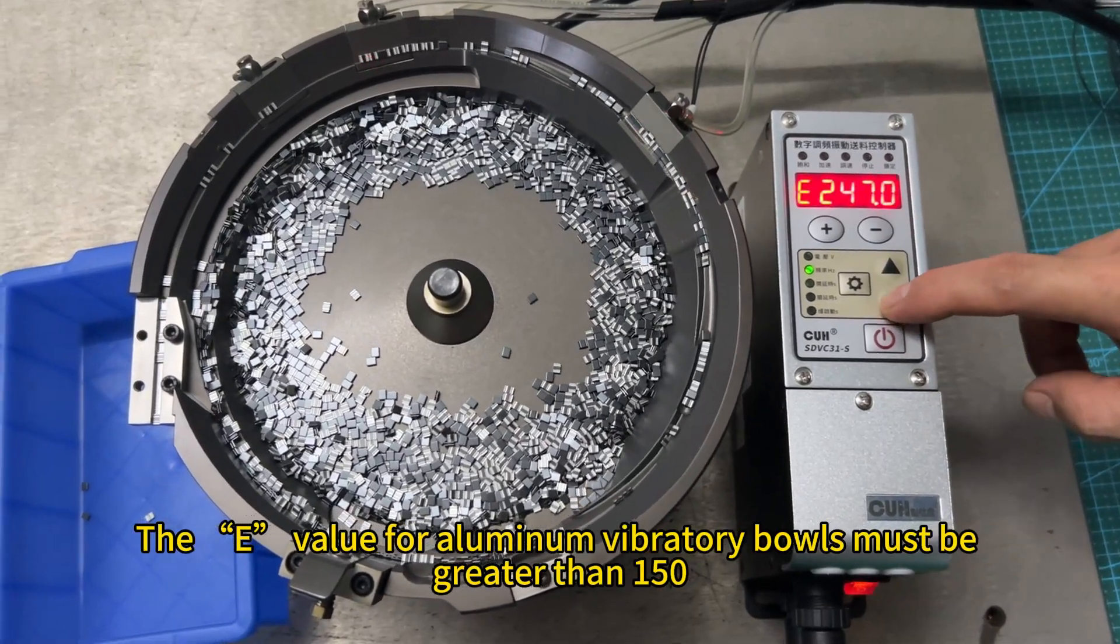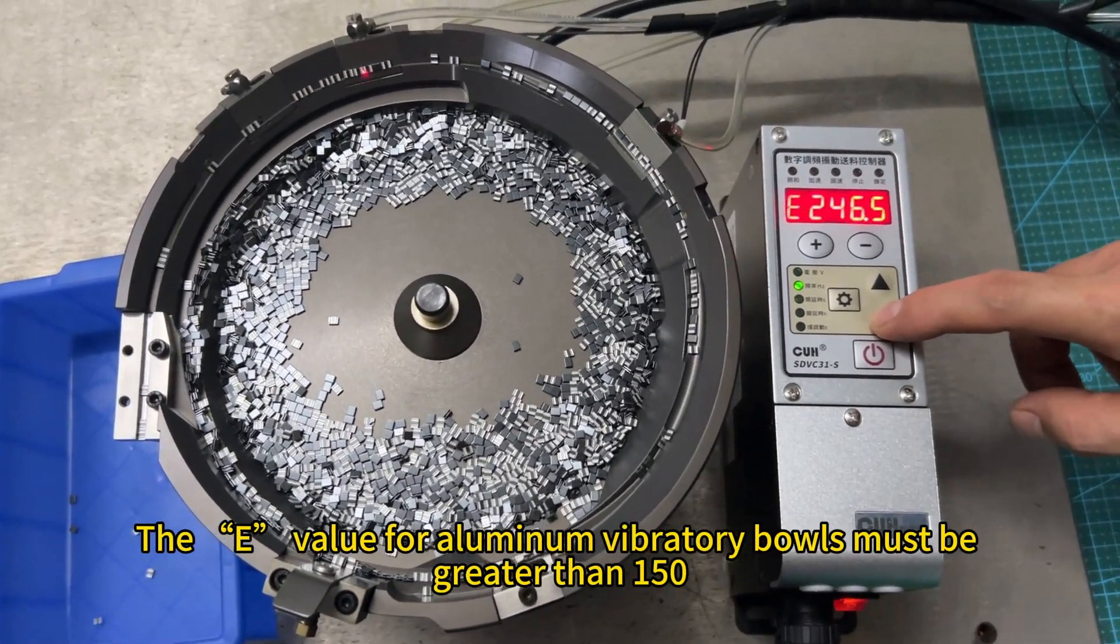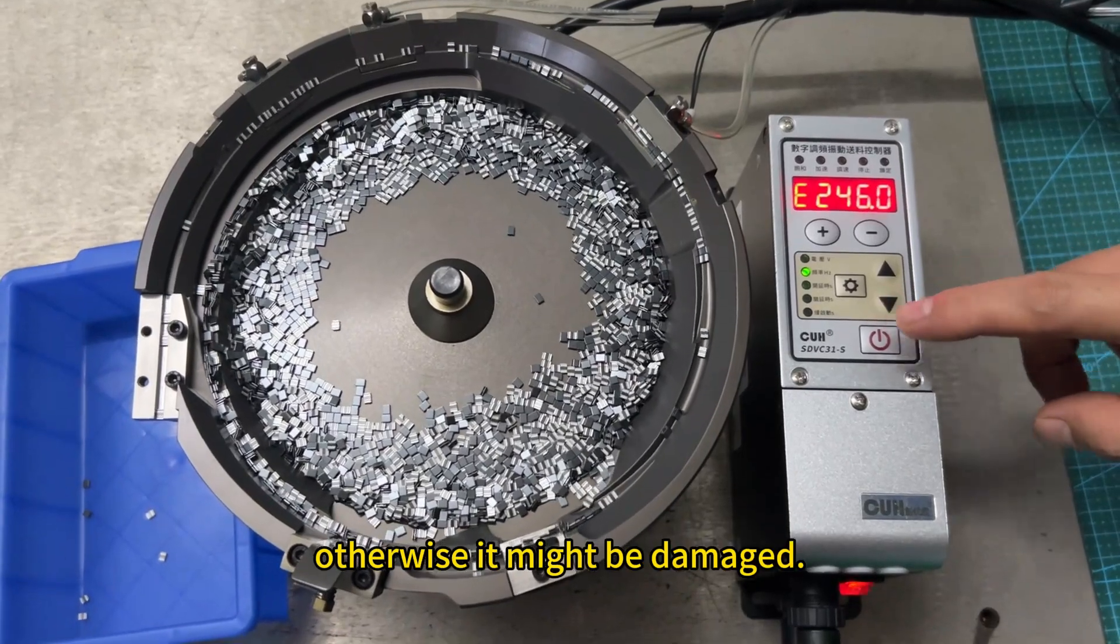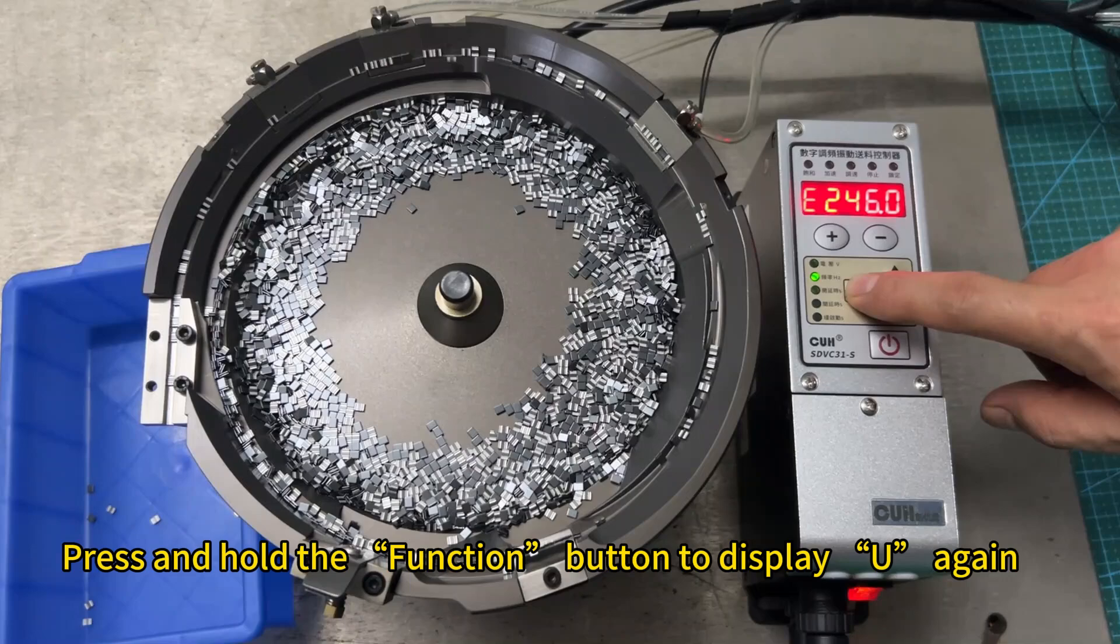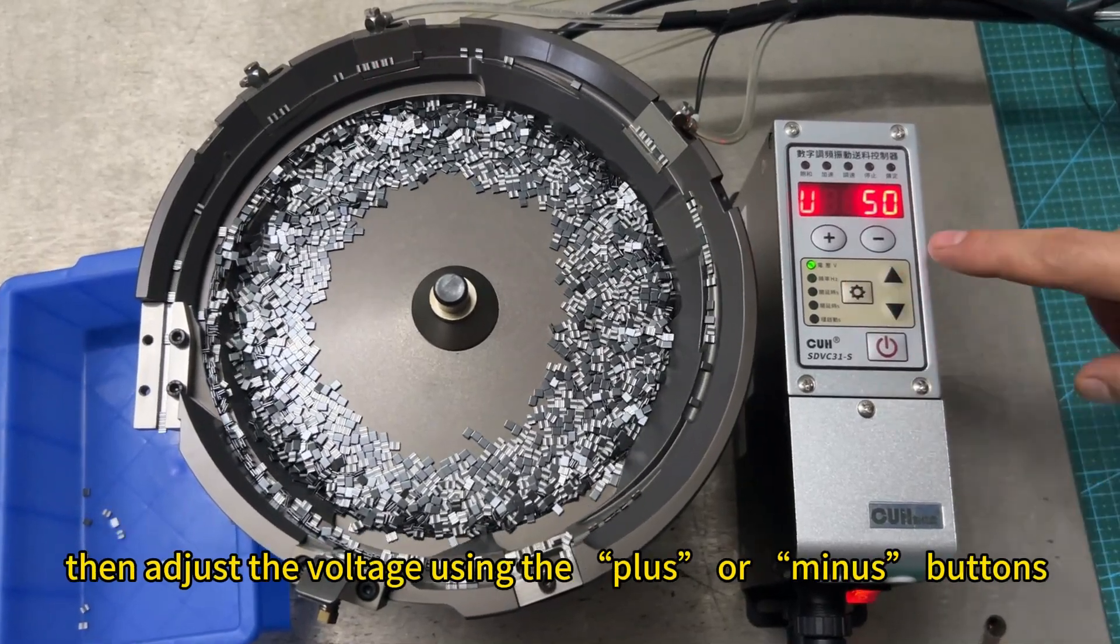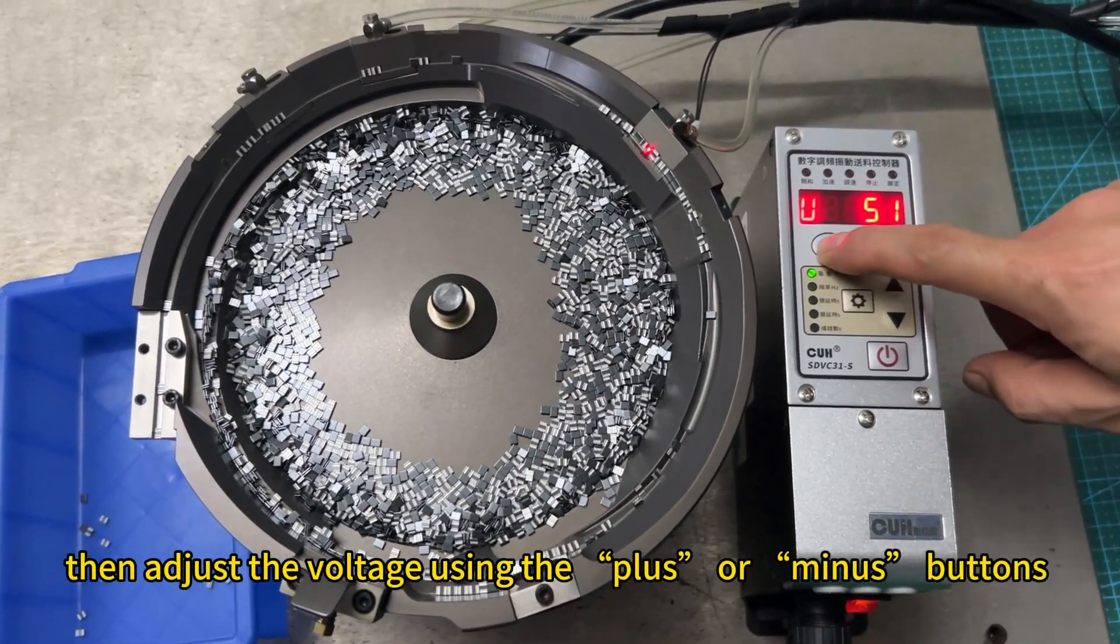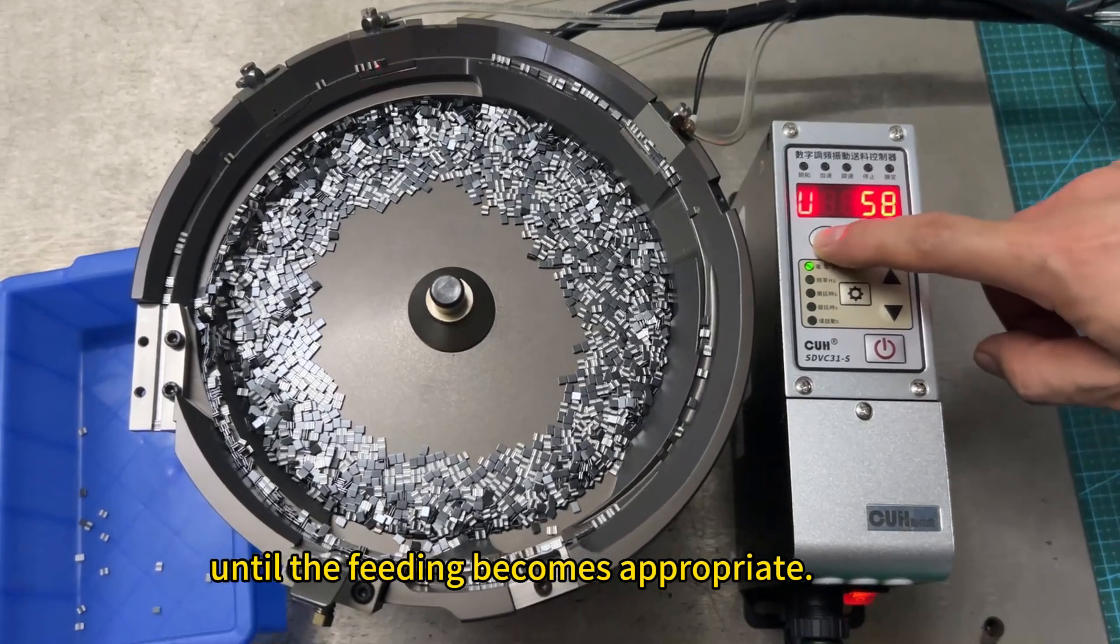The E value for aluminum vibratory bowls must be greater than 150, otherwise it might be damaged. Press and hold the function button to display U again. Then adjust the voltage using the plus or minus buttons until the feeding becomes appropriate.